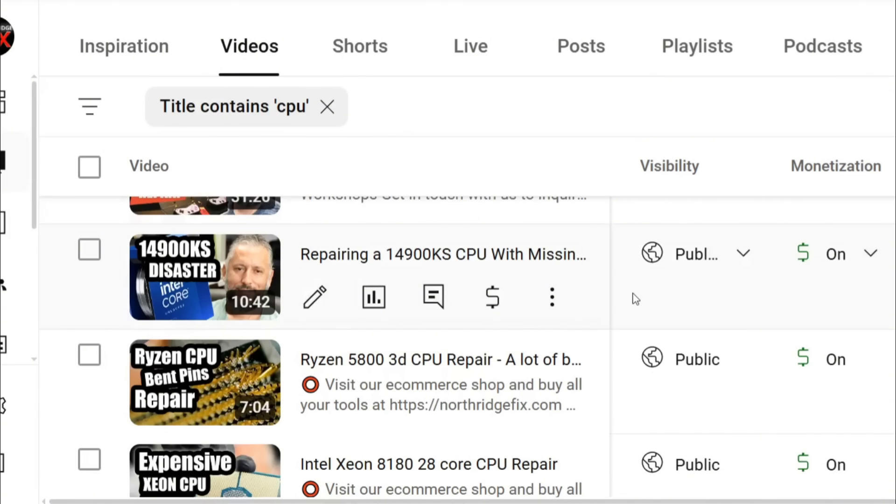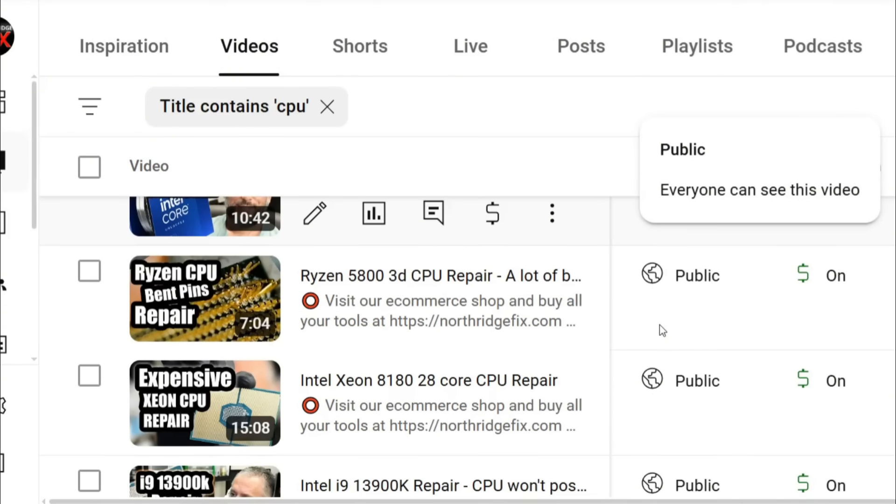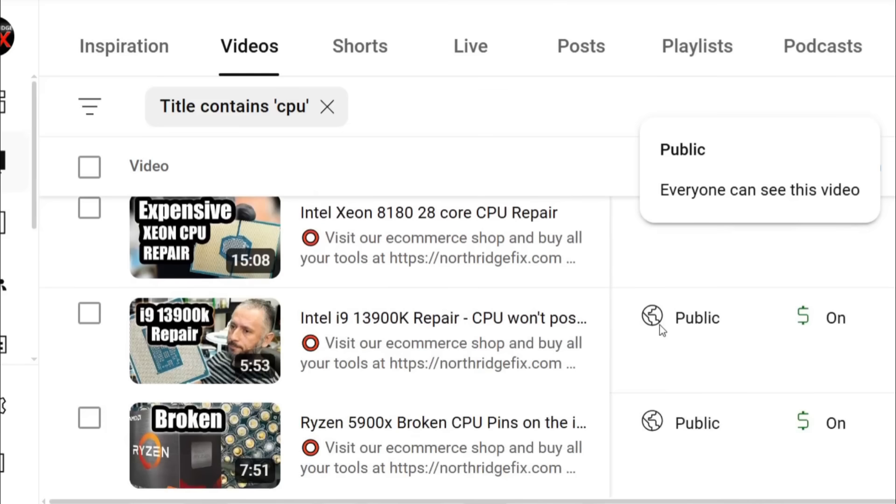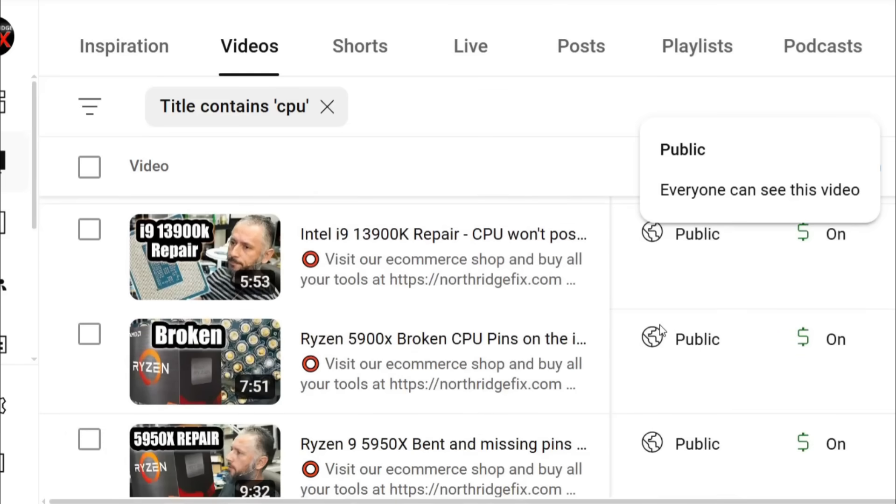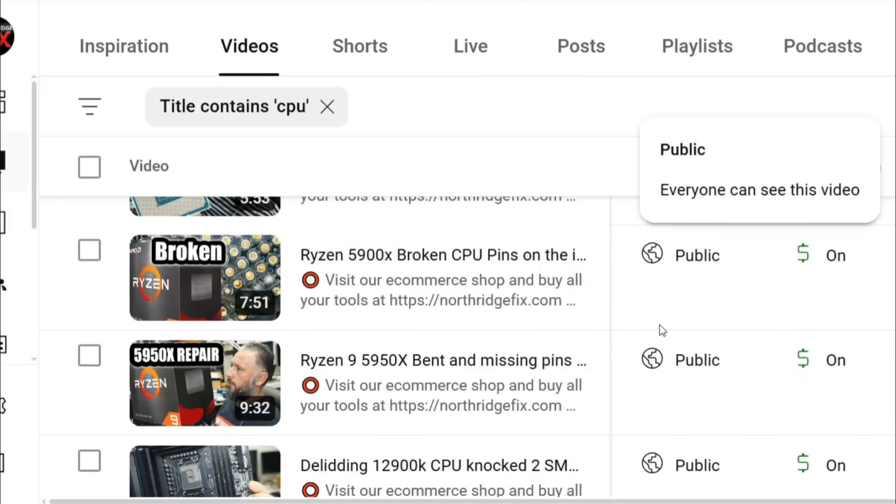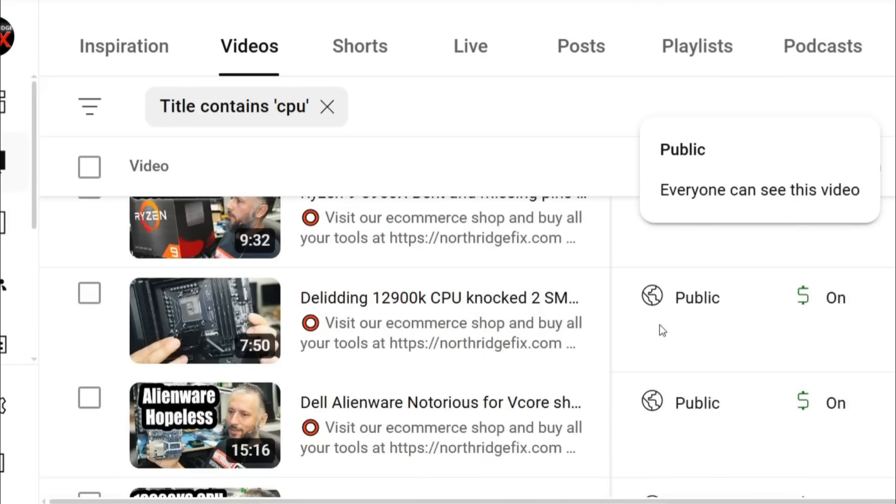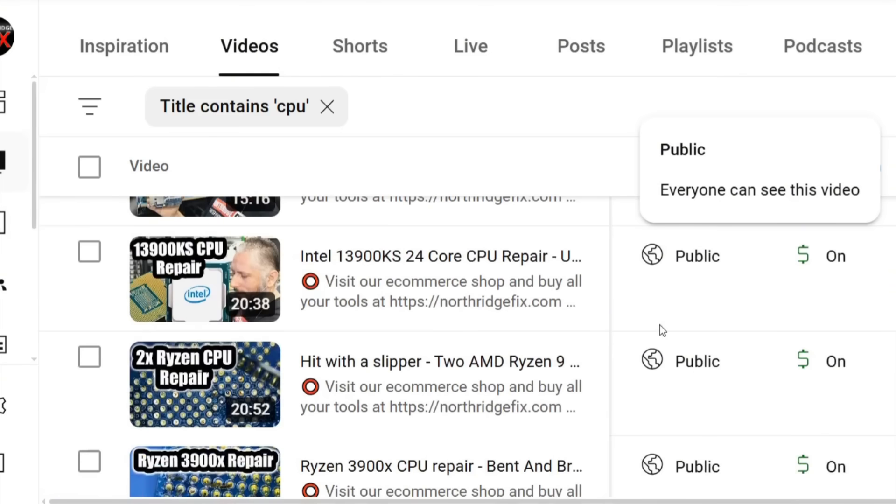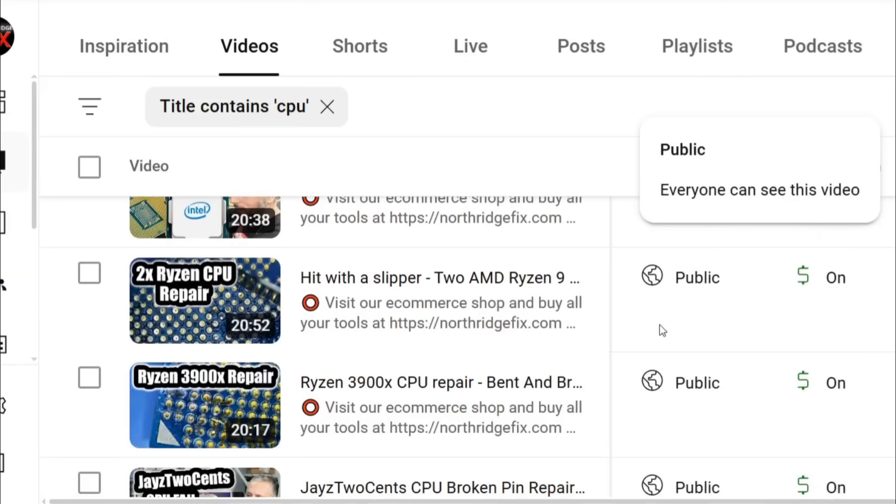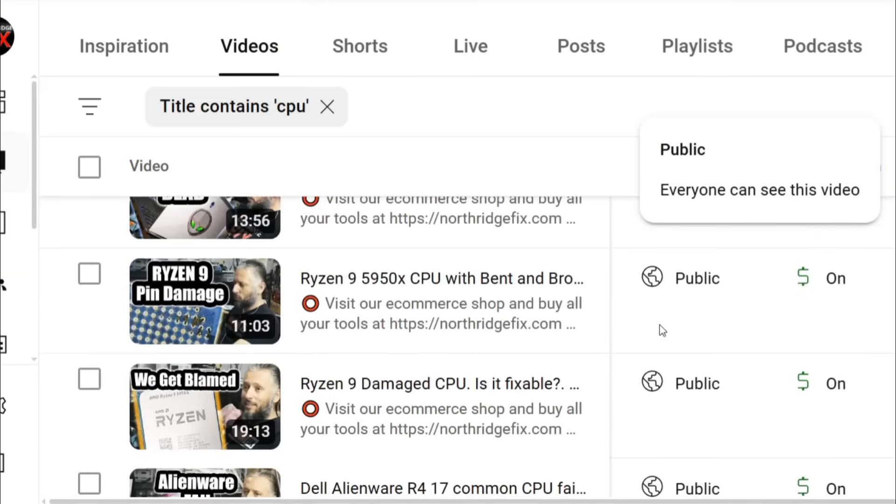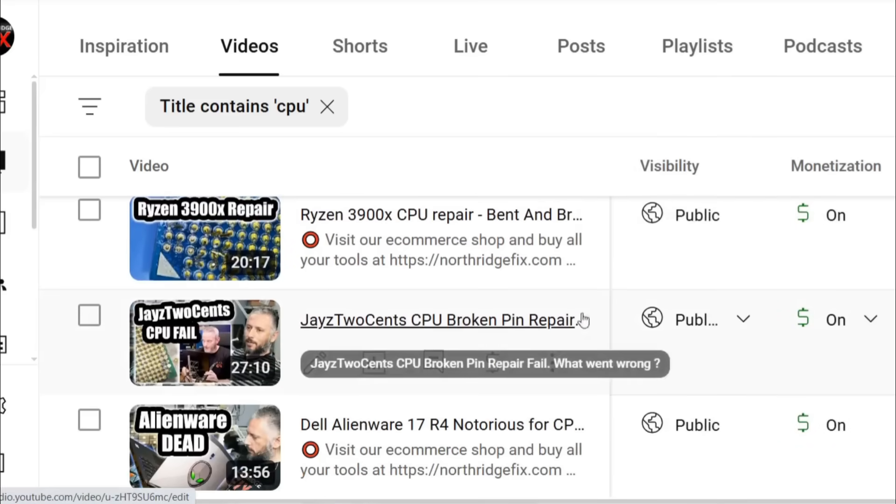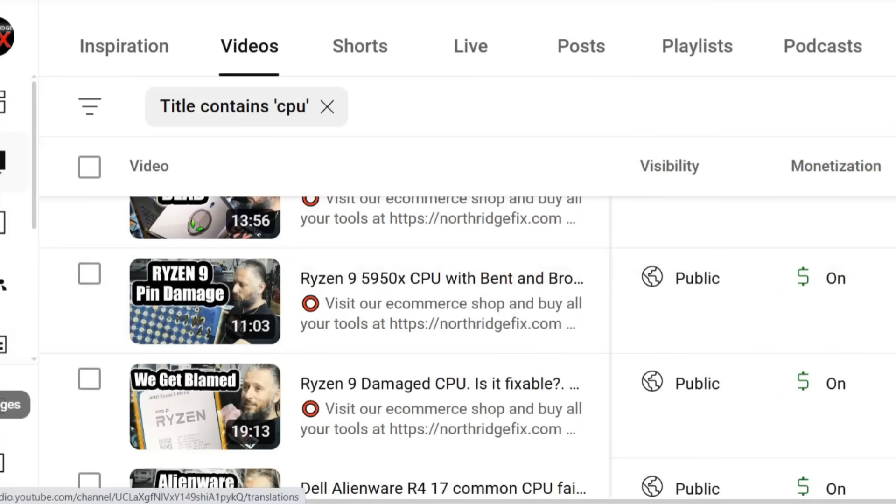If you search Northridge Fix CPU, you see we have countless number of videos. We worked on 14900KS, Ryzen 5800, Intel Xeon 8180, 13900K, Ryzen 5900X, 5950X, 12900K, 13900KS, and the list goes on. I even have a video about Jayz2Cents when he attempted to replace broken pins on the Ryzen CPU. Just search Northridge Fix CPU and you will find all those videos.